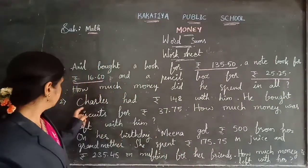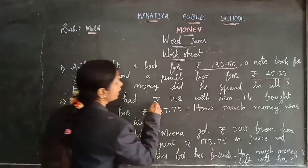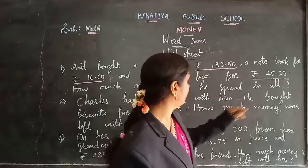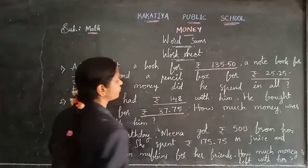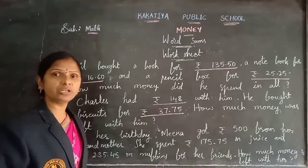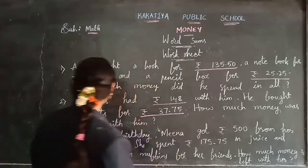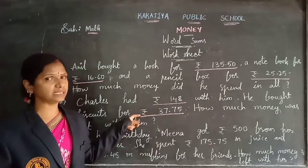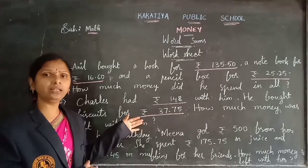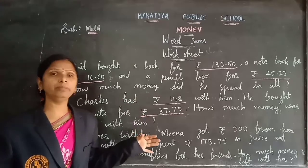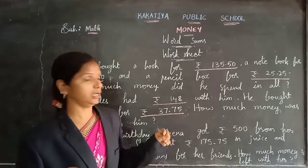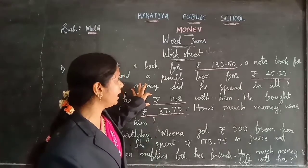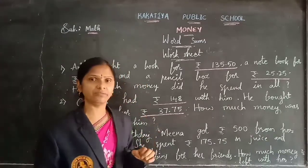Worksheet Problem 2: Charlis had 148 rupees with him. He bought biscuits for 37 rupees 75 paise. How much money was left with him after purchasing the biscuits? He had more amount than the biscuit cost, so after spending on biscuits some amount will be left. To find the left amount — just like finding the get-back amount — you need to do the subtraction: subtract 37 rupees 75 paise from 148 rupees.